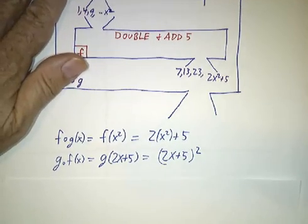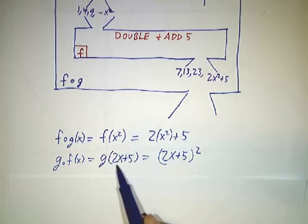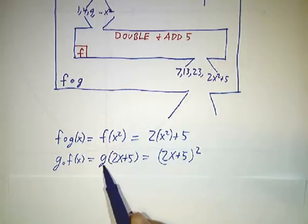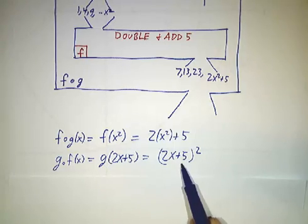If we wanted g of f, then we would have fed x to the f machine first. We would have gotten 2x plus 5. And then the g machine squares whatever you feed it. So we would have gotten 2x plus 5 squared.